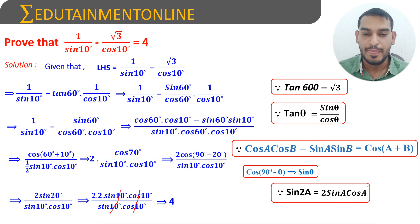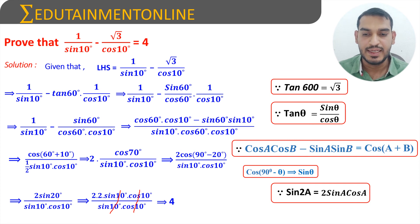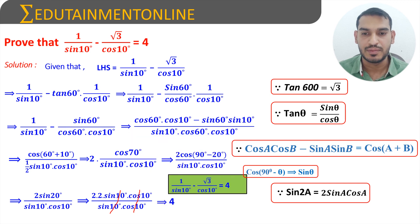Therefore, it is proved that 1 by sin 10 degrees minus root 3 by cos 10 degrees is equal to 4.